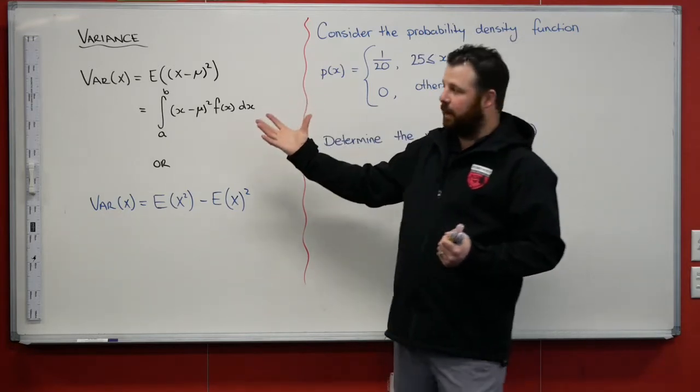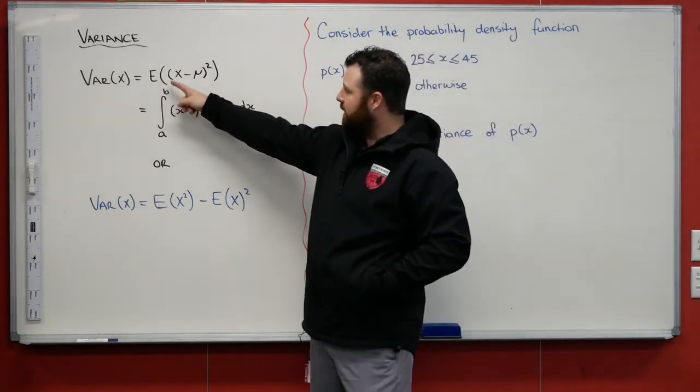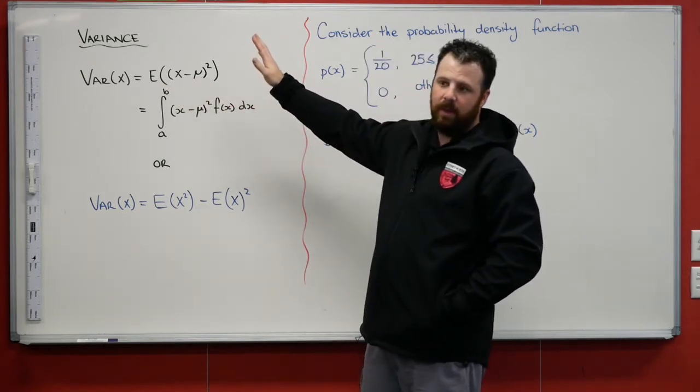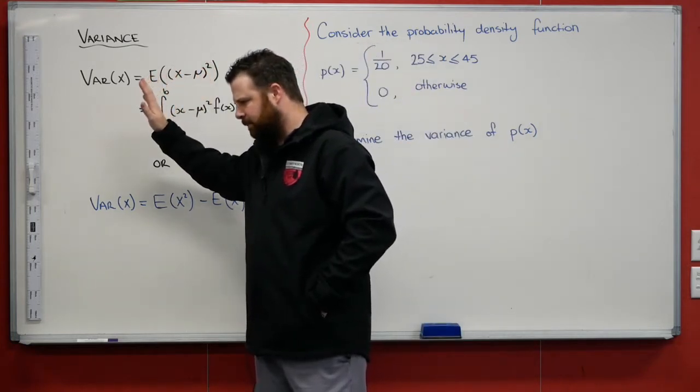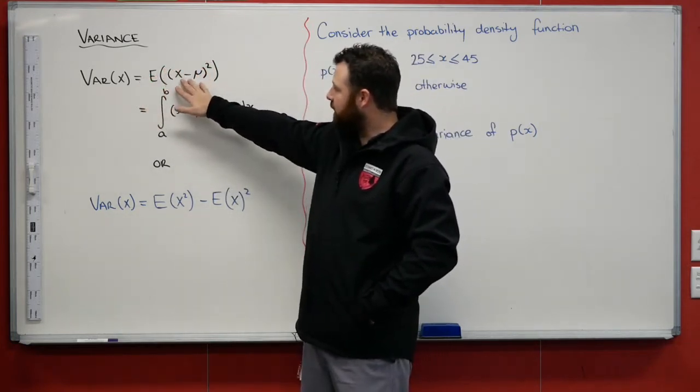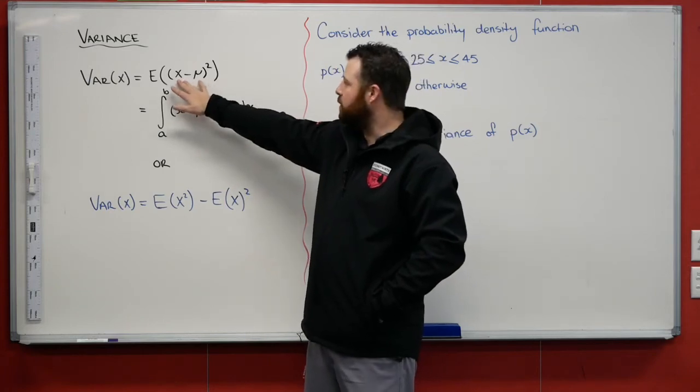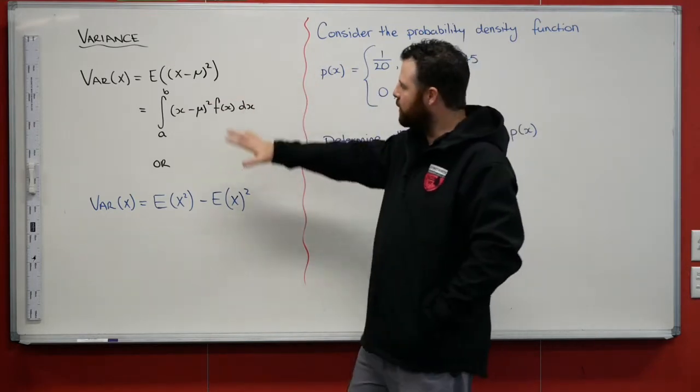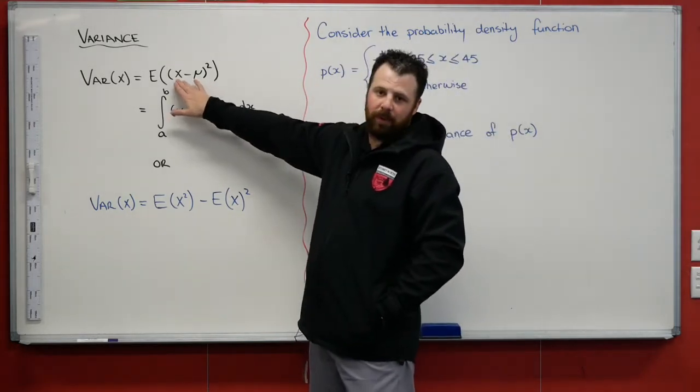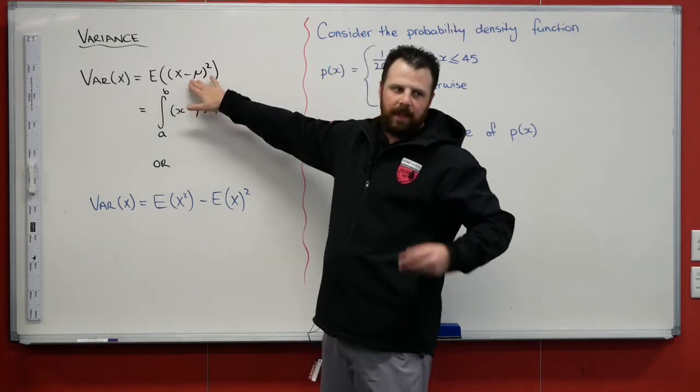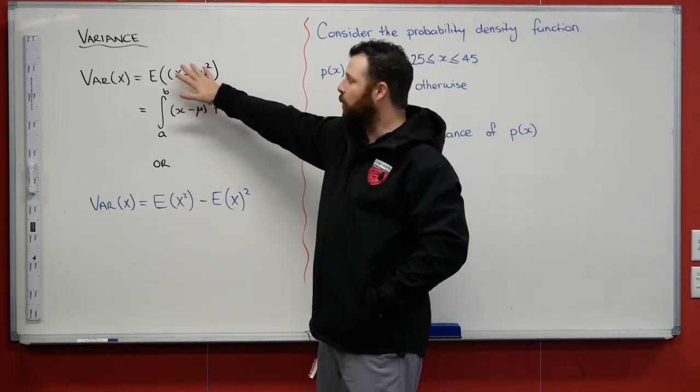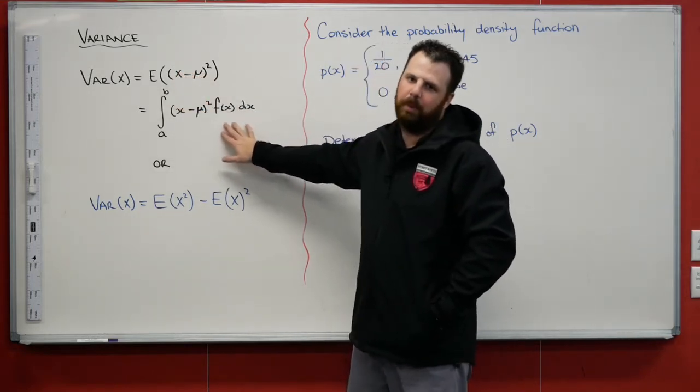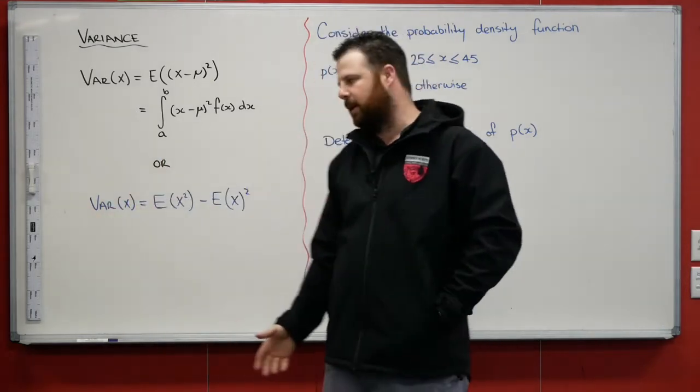When it comes to variance, how do we calculate it? Well, variance has to do with the expected value. And what we're going to substitute into our expected value is the score minus the population mean squared. From discrete random variables, we get each score, took away the population mean, squared that, and then multiplied it by the probability of that score happening, and added all of them together.